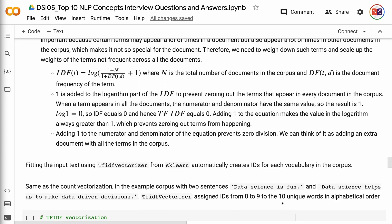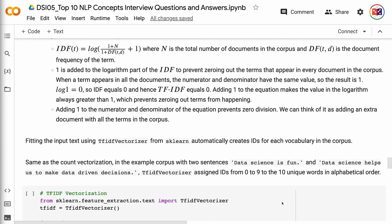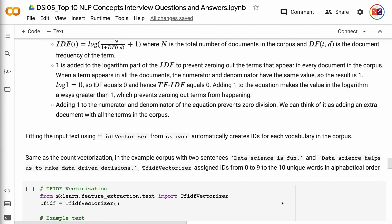Adding 1 to the equation makes the value in the logarithm always greater than 1, which prevents zeroing out terms from happening. Adding 1 to the numerator and denominator of the equation prevents zero division. We can think of it as adding an extra document with all the terms in the corpus.